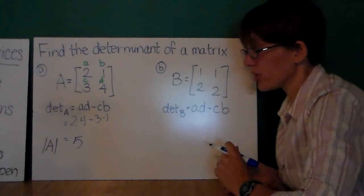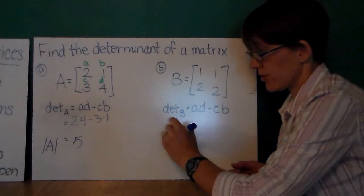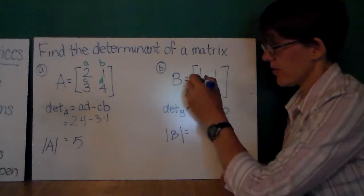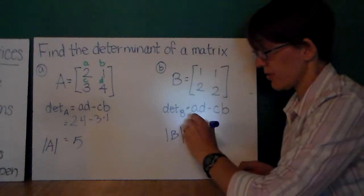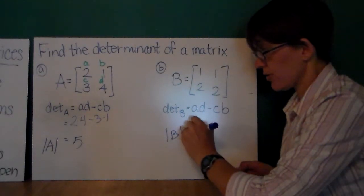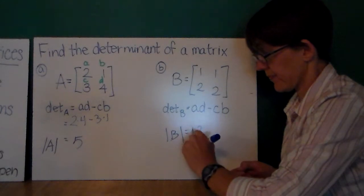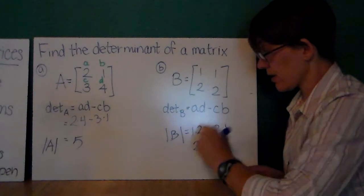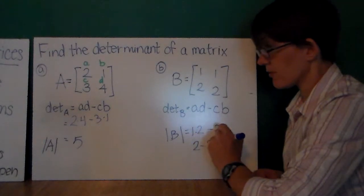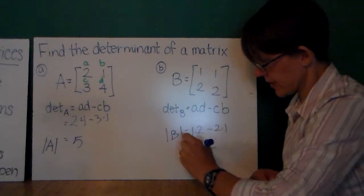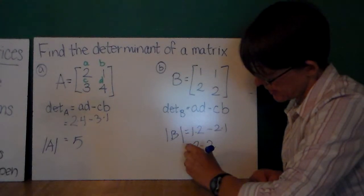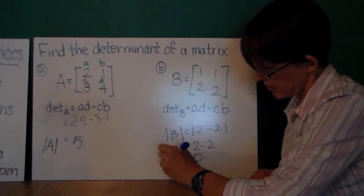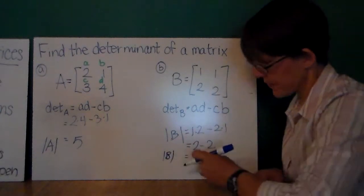Let's calculate the determinant again using the formula AD minus CB. So, 1 times 2 is 2, and 2 times 1 is also 2. So, I have 2 minus 2, or 0. So, my determinant for my matrix B is 0.